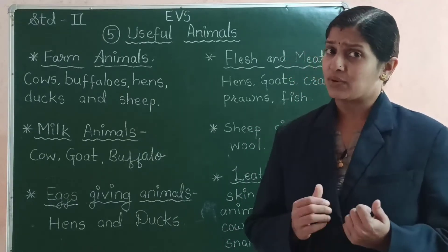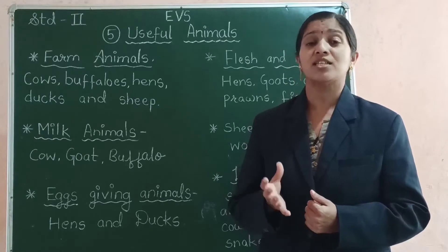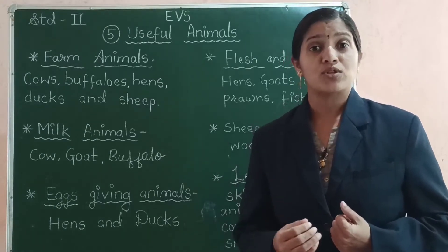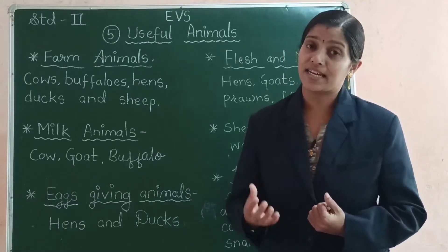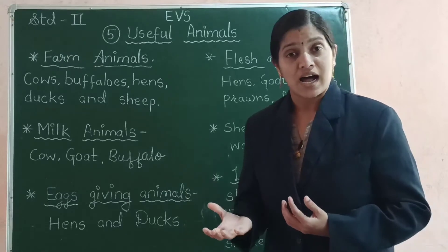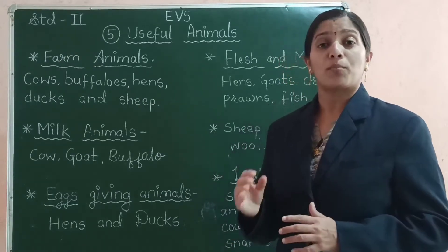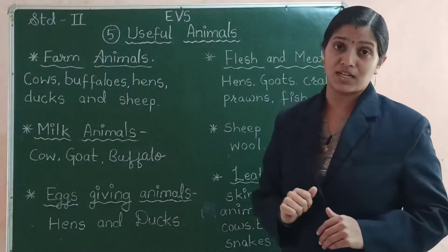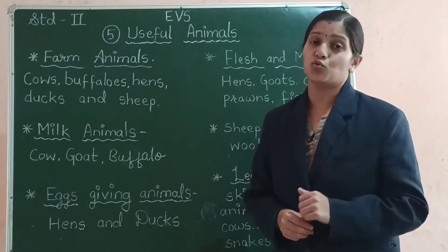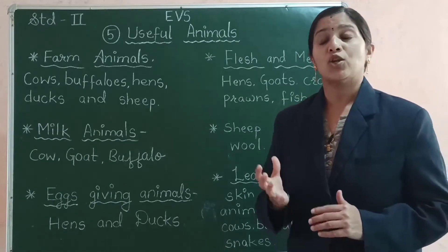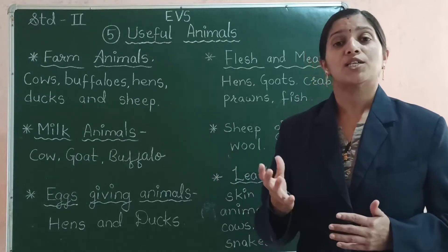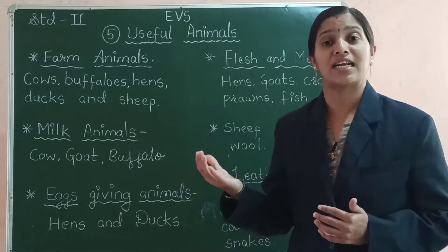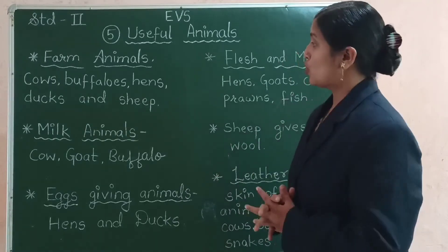Why do we keep these animals at our houses or farms? Animals like cows, buffaloes, hens, and ducks are useful to human beings. They give some products which are very useful to us, and that is why we keep them at our houses and farms. The topic we are going to discuss today is the 5th lesson of EVS — Useful Animals. The animals domesticated by human beings are useful in many ways, and we get various products from them.